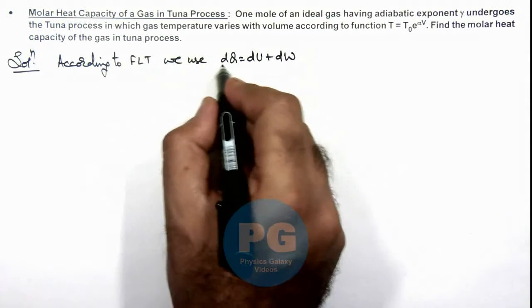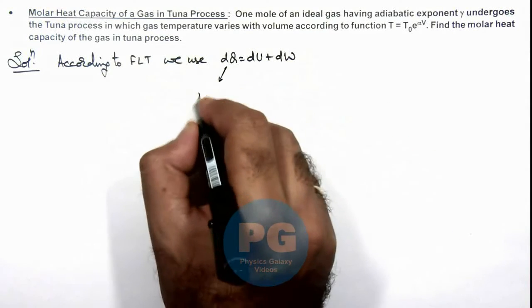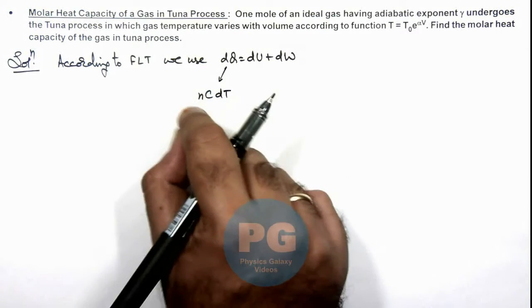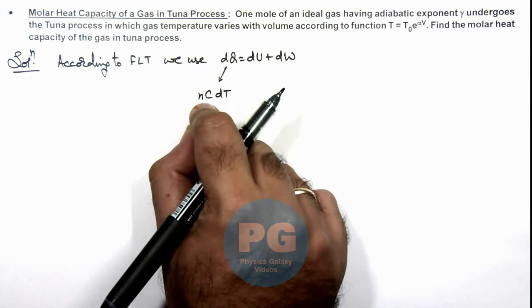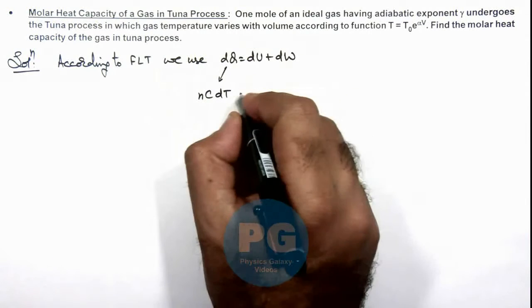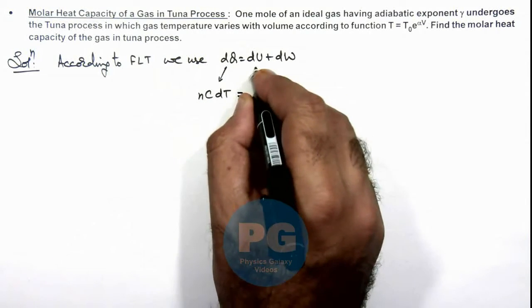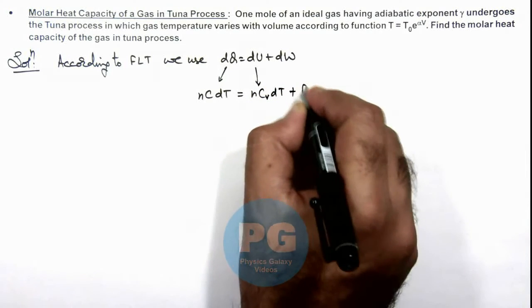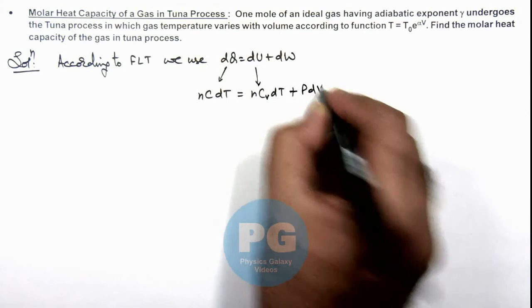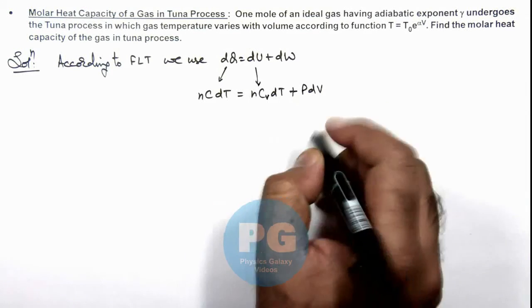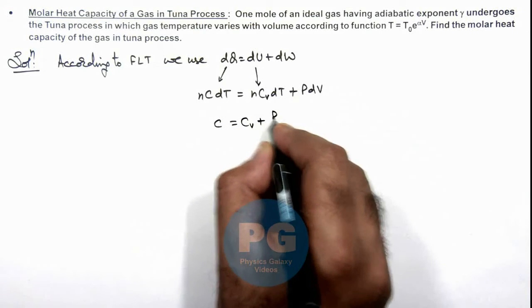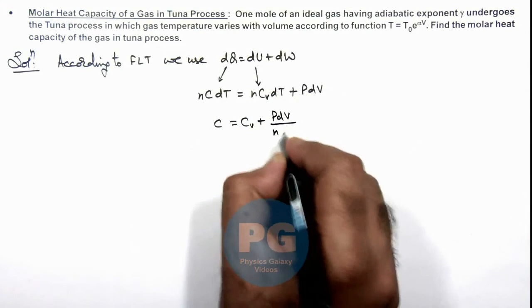dQ we can substitute as nCdT, if C is the molar specific heat of the gas in this specific process. On the other side, dU we can write as nCᵥdT. Work done in differential form we can always write as PdV. So the molar specific heat C can be given as Cᵥ + PdV/(ndT).